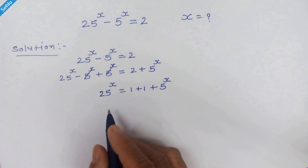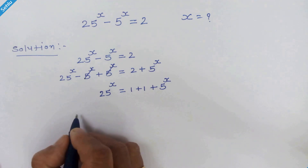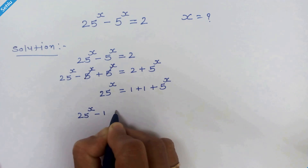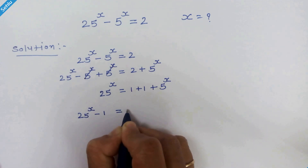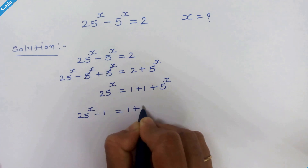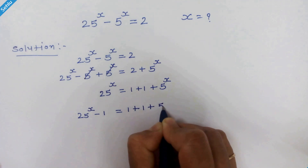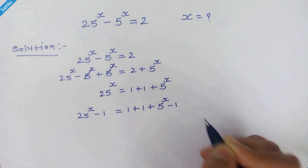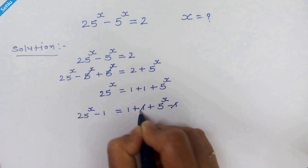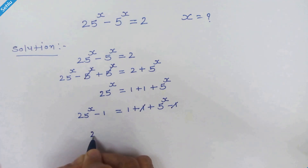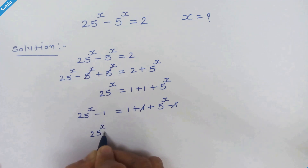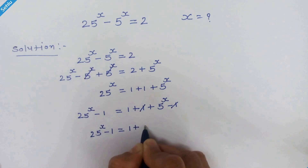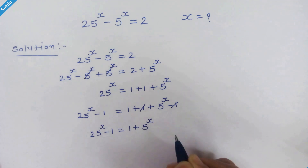Now in the next step we will add minus 1 to both sides. We have 25 raised to x minus 1 is equal to 1 plus 1 plus 5 raised to x minus 1. These two ones cancel out, so we have 25 raised to x minus 1 is equal to 1 plus 5 raised to x.